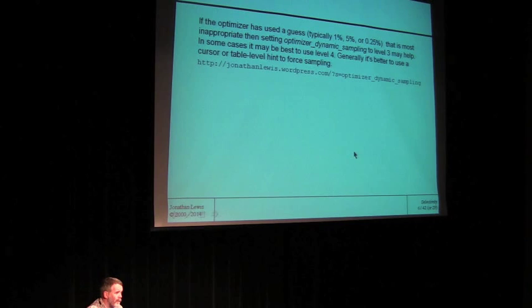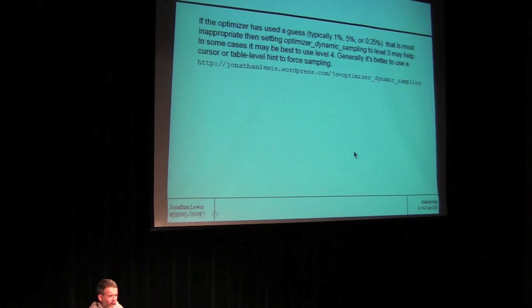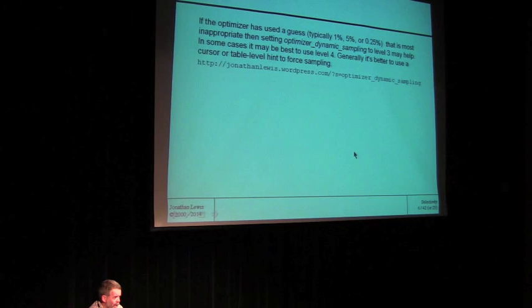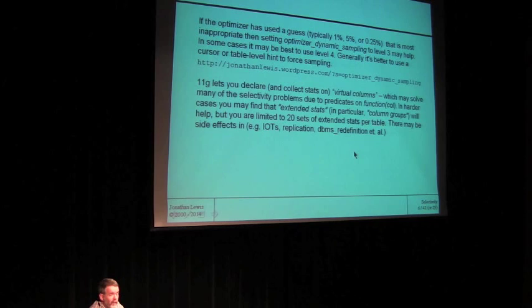This gives you a better choice of what approach to take to resolve the problem. The sorts of solutions you might pick up on are things like these — and again, these are the closing slides of the presentation, because otherwise I might not get there. Oracle often guesses. When it's guessing, 1%, 5%, and 0.25% are very commonly occurring guesses. So watch out for the cardinality that suddenly drops by a factor of 100, or 20, or 400. Because maybe Oracle's guessing. If that is the case, perhaps switching to optimizer dynamic sampling might help — dynamic sampling at level 3 when Oracle is guessing.